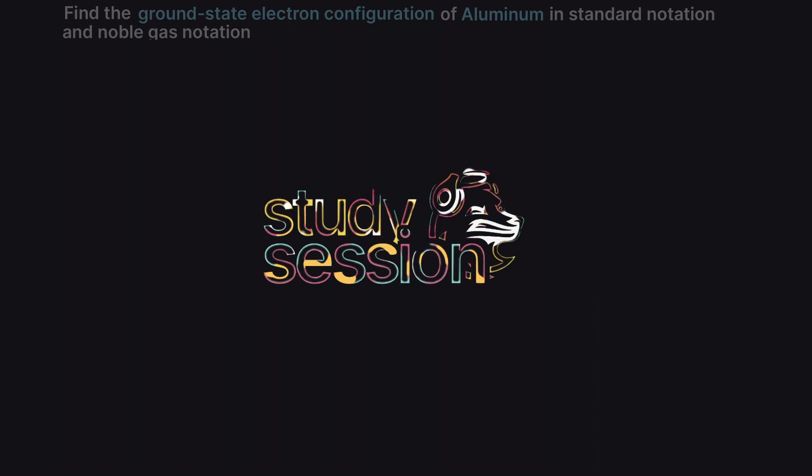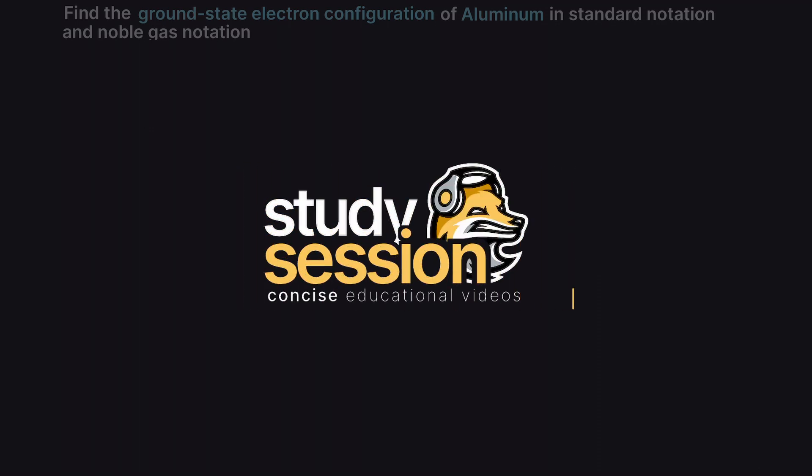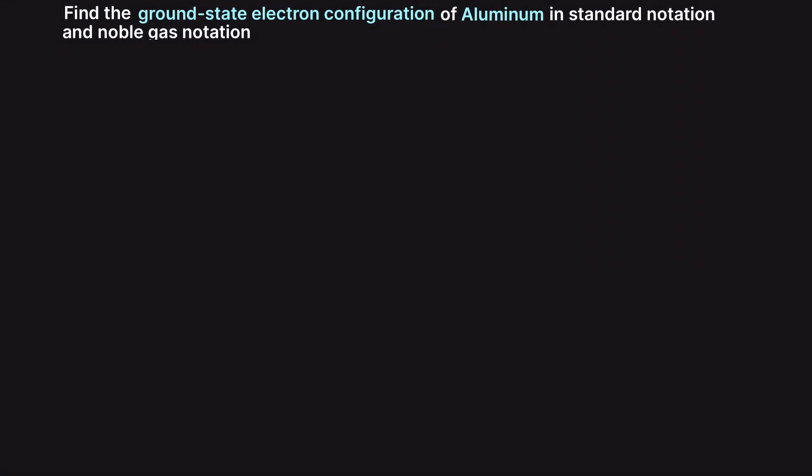Hey everyone, we are asked to provide the ground state electron configuration of aluminum in the standard and noble gas notations. I recommend you take a minute now and try to solve this problem on your own before we go through the answer together.